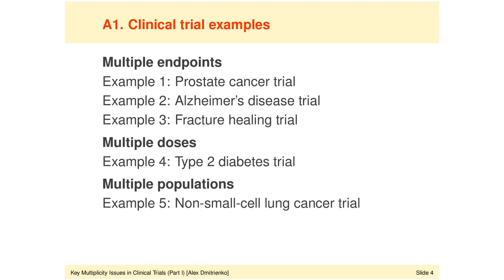And finally, example five deals with multiplicity induced by the analysis of multiple patient populations. Even though the settings in examples four and five look different from example one, the actual underlying multiplicity problems in examples four and five are conceptually very similar to what we see in example one, which is the prostate cancer trial example. This is why it is so important for us to classify multiplicity problems and have a good understanding of different types of inferential goals in multiplicity issues arising in clinical trials.